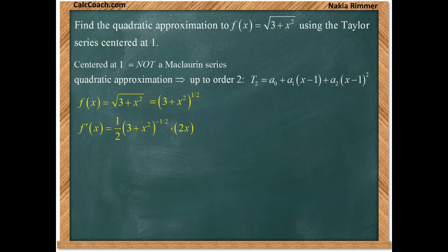The chain rule, which is the derivative of the inside. Okay, simplifying this, the 2's cancel, and we have x over the square root of 3 plus x squared.